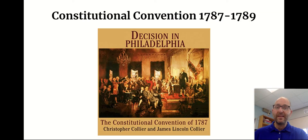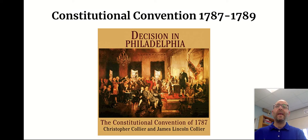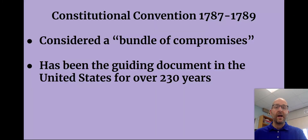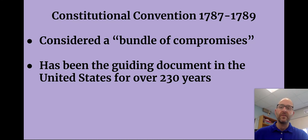From 1787 to 1789, 55 white landowning men met in Philadelphia and came up with the new form of government we still have today. Granted, we've made changes to it and we interpret it differently, but it's still the same document — the Constitution. Many people call it a bundle of compromises, and it's been our guiding document for over 230 years.